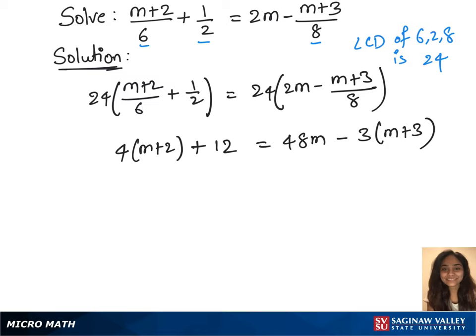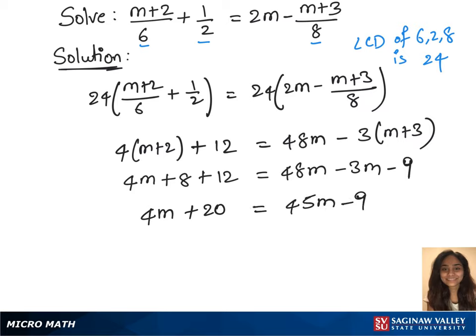So we have 4m plus 8 plus 12 equals 48m minus 3m minus 9. Combine the like terms in our next step, so we have 4m plus 20 equals 45m minus 9.